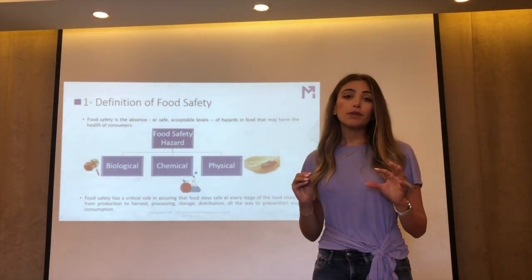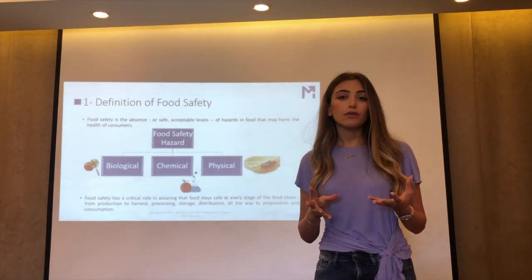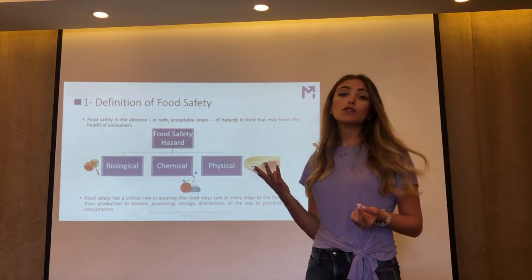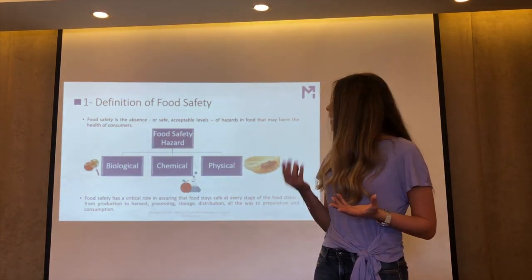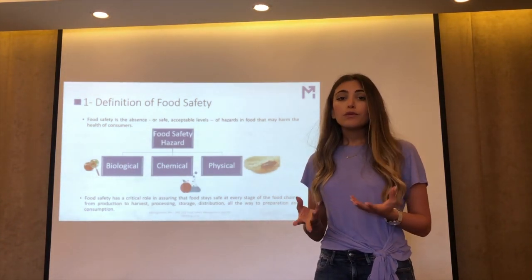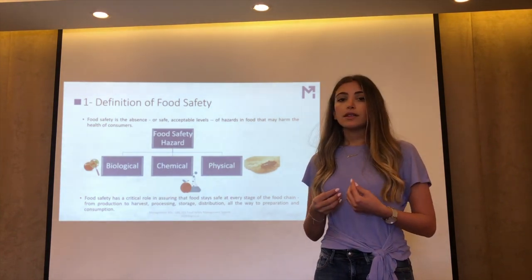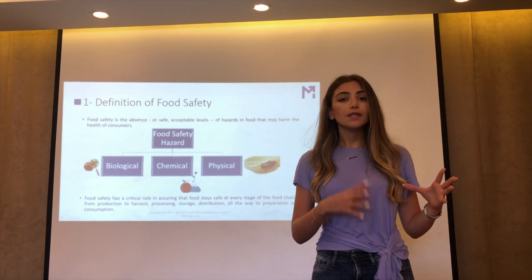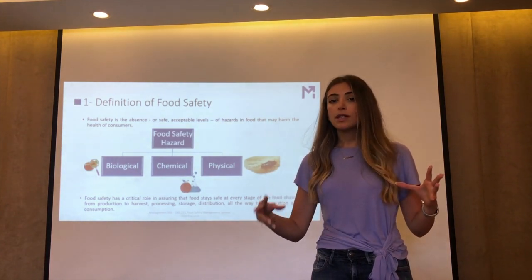Biological hazards could be bacteria or viruses. Chemical hazards could be any chemical residue, for example pesticide residue. And physical hazards could be, for example, insects. In general, biological or chemical hazards could not be visible to the plain eye. So food safety has a major impact on the safety of our food, from harvesting to receiving, processing, production, distribution, till consumption of food.